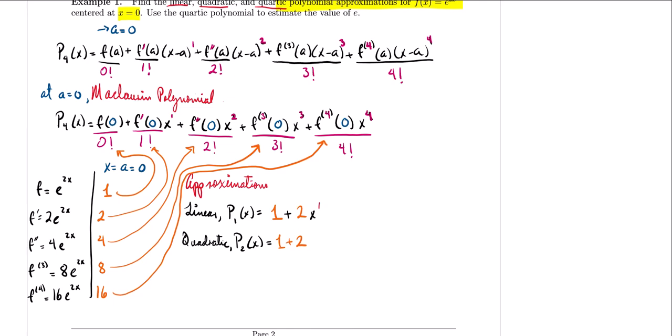For the quadratic approximation, we have 1 plus 2x plus the next coefficient, which is 4, times x squared. Starting from the second order term, remember we divide by the factorial of the derivative number taken. So we divide 4 by 2 factorial: 4 over 2 is 2. Therefore the quadratic approximation is p sub 2 of x equals 1 plus 2x plus 2x squared.